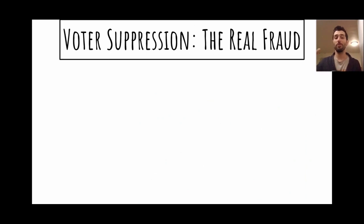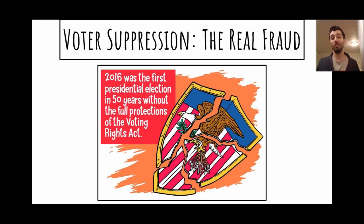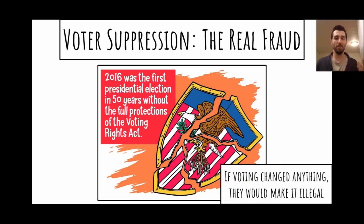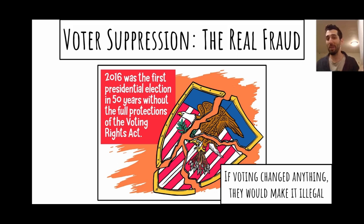Now you may have heard of voter fraud before, but voter fraud is actually a rhetorical sleight of hand to get people to blame the victims — the voters, or rather the people who are trying to be voters but can't vote. In 2015, the Supreme Court voted to overturn the Voting Rights Act. So 2016 was the first presidential election in 50 years without the Voting Rights Act. There are a number of strategies that states employ to oppress voters. As the quotation commonly attributed to Mark Twain goes: if voting changed anything, they would make it illegal. Voter suppression is exactly that example of people trying to make voting illegal.